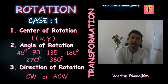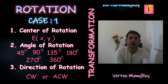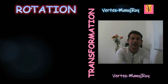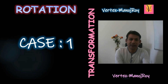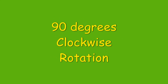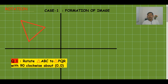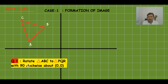Direction can be clockwise or anticlockwise. The angle of rotation must always be given together with direction — so when 90° is given, it will also state whether it is clockwise or anticlockwise. In Case 1, center, angle, and direction are all given in the exam. Now we move to our first example: rotate triangle ABC to triangle PQR.